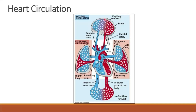Deoxygenated blood is returned to the heart, entering the right atrium via the vena cava. The superior vena cava carries deoxygenated blood from the forelimb, while the inferior vena cava carries deoxygenated blood from the hind limb.